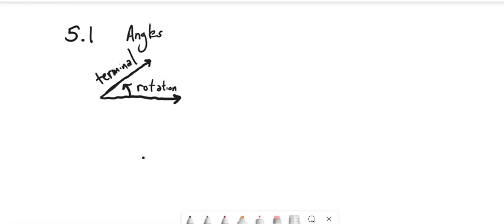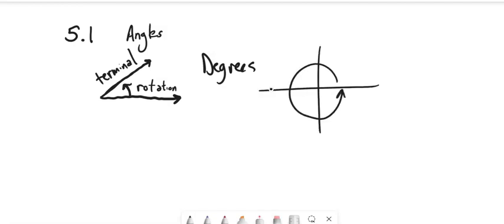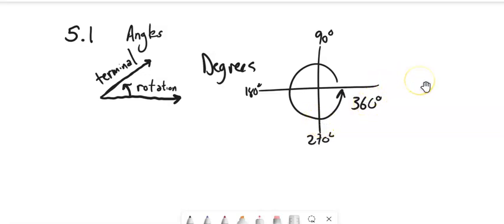You can think of an angle two ways: you can think of it as a thing, like a space, or you can think of it actively as a rotation. Typically we talk about degrees when we have angles. All the way around is 360 degrees. Straight up would be 90 degrees, out here is 180 — think of this as a fourth of the way, half of the way, three-fourths of the way, and a full circle.